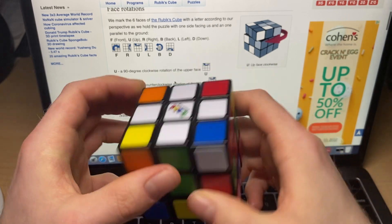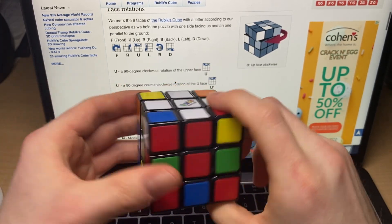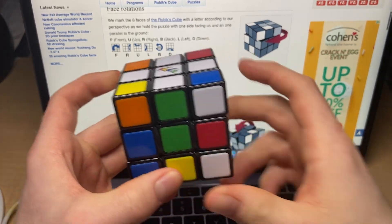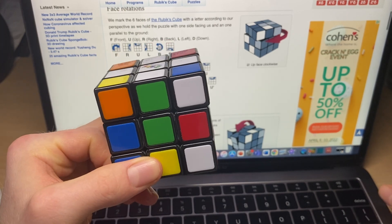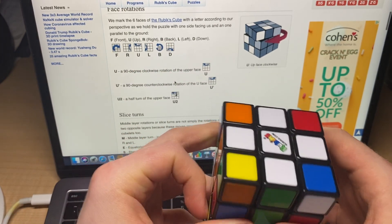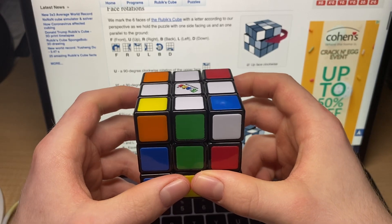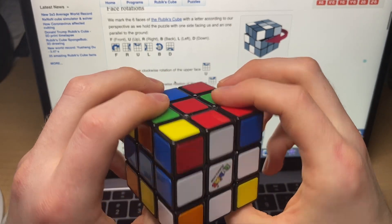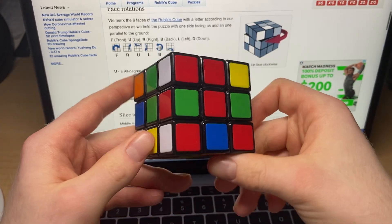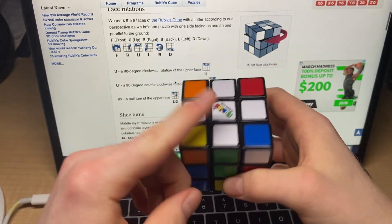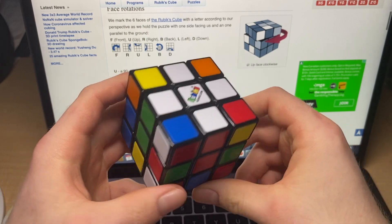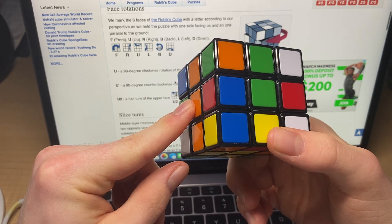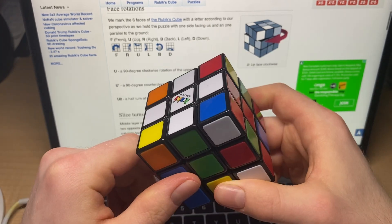I don't use algorithm notation for it, but I will present the algorithm notation that goes with it. Let's see here—for the cross, just do it intuitively. Don't worry about algorithms for that one. Same thing will go for the corners. I will tell you what the algorithms are, but again, I didn't learn it that way, so yeah, all right.